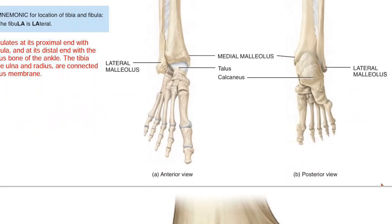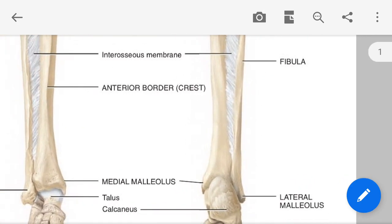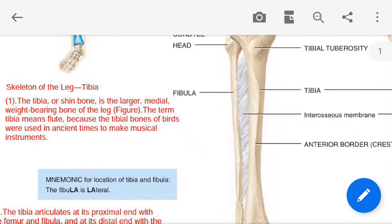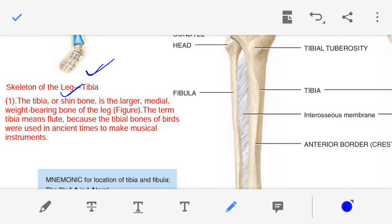This is the anterior view and this one is the posterior view. The tibia, also known as the shin bone, is the larger medial bone. It is present in the medial center of our leg, and it bears our body weight — so it is the weight-bearing bone of the leg.